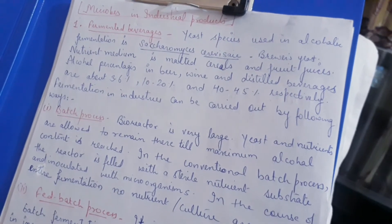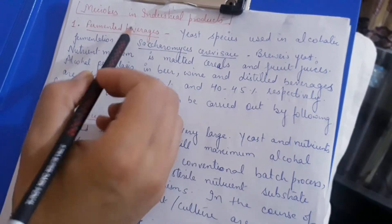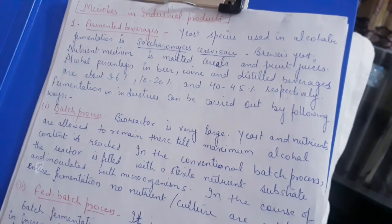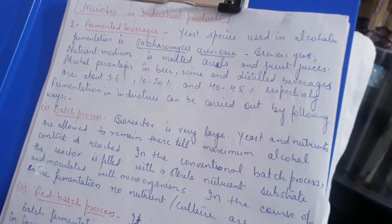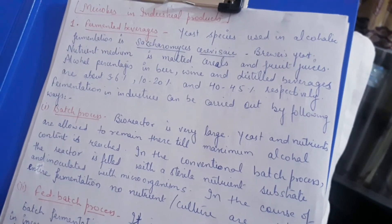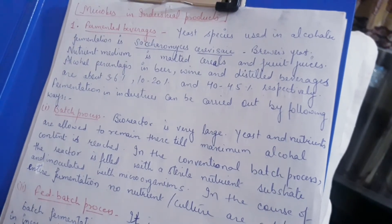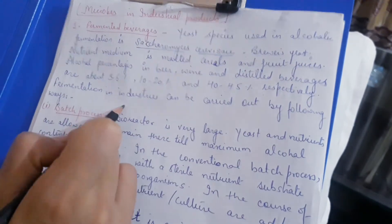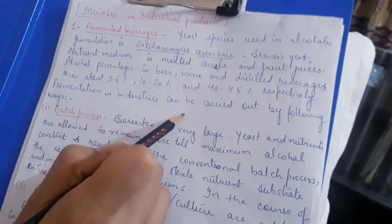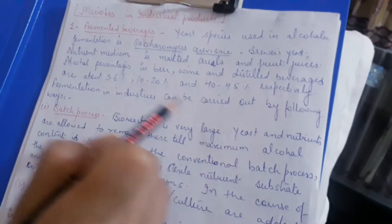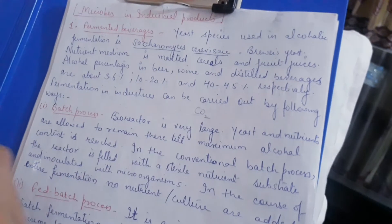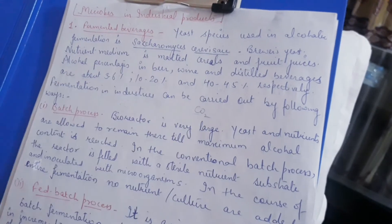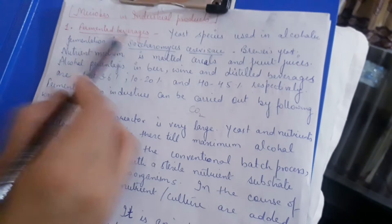The first topic is fermented beverages — alcoholic drinks. Fermentation means when we make alcohol, we use microorganisms. For example, from sugarcane juice, sugar is converted into alcohol with the help of microorganisms, and the by-product is carbon dioxide. Carbon dioxide production indicates that fermentation is complete.